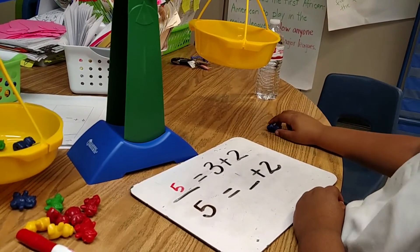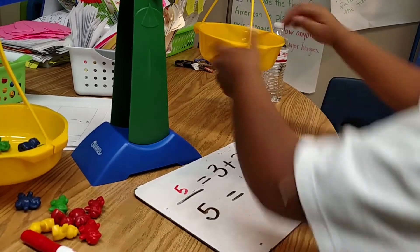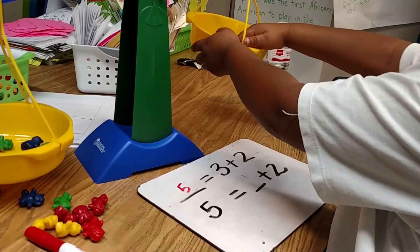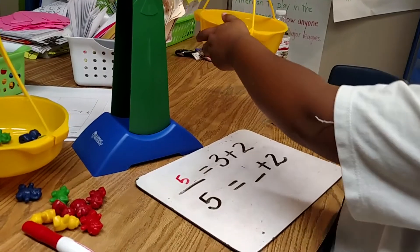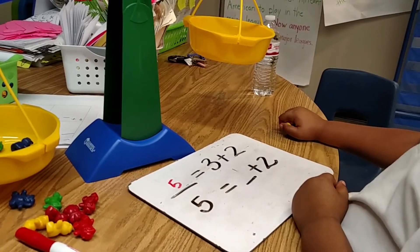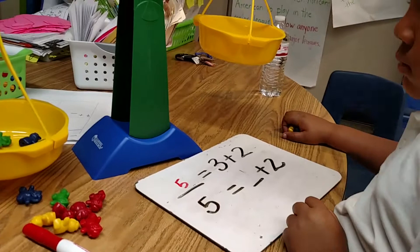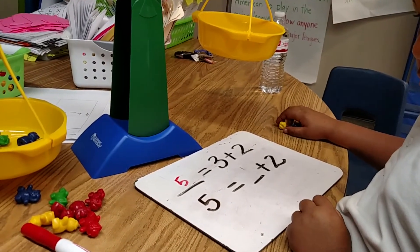Is it balanced? Okay, so take those out. Just take two out. Okay, so we had two in there and you added two more. Did that balance it out? Do you think you need more than two or less than two?